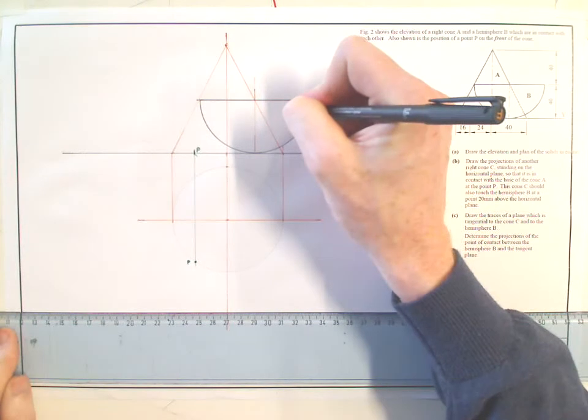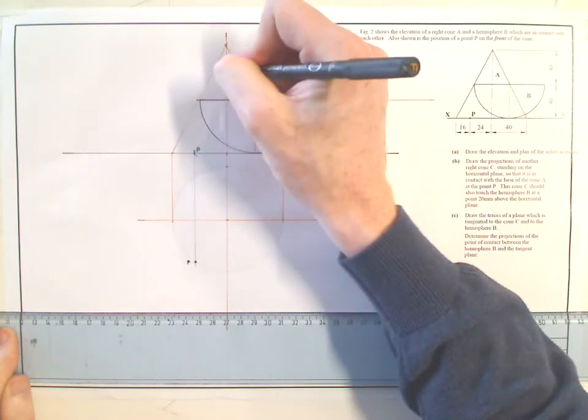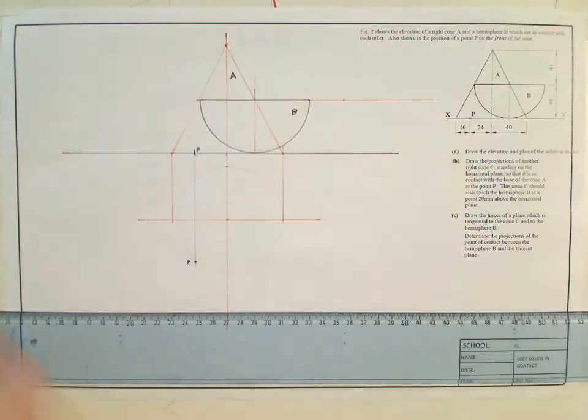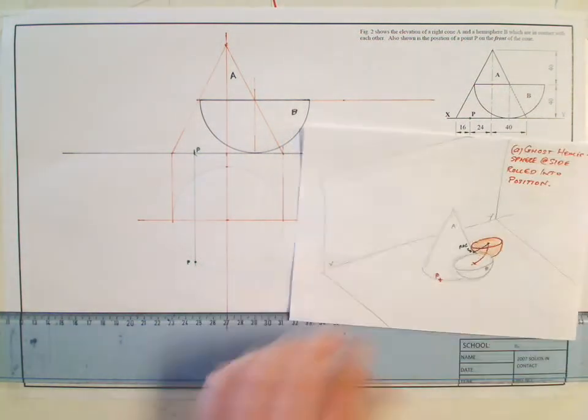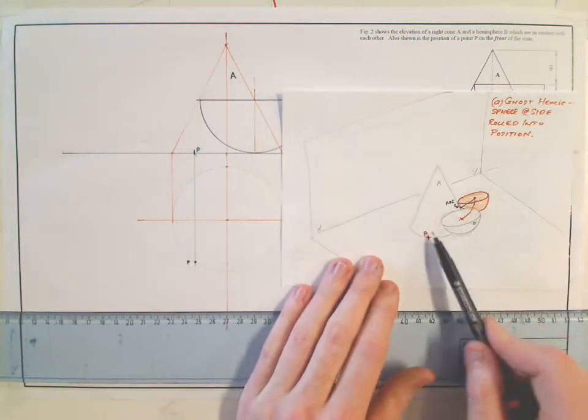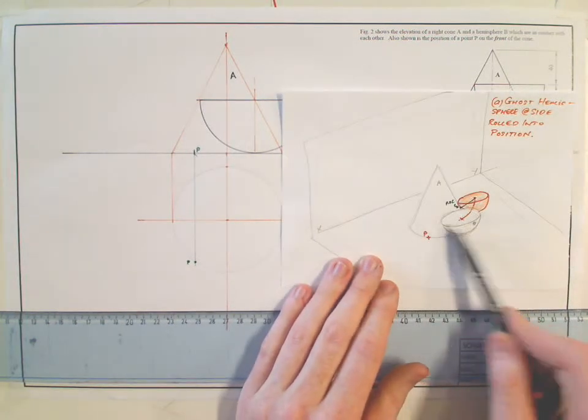That there is B. That there is A. That's my hemisphere and it's located in its final position. So the first thing I have to do, I look at my quick sketch here. What I have now is I have the hemisphere here in its final position.